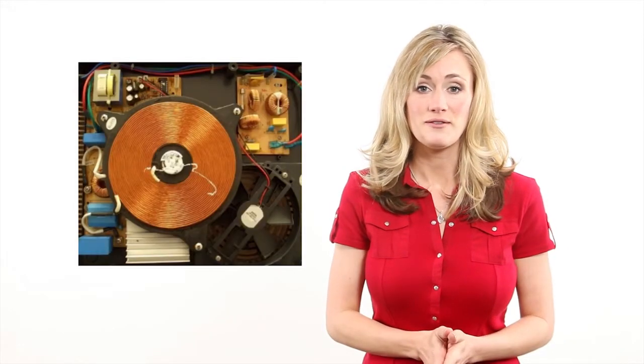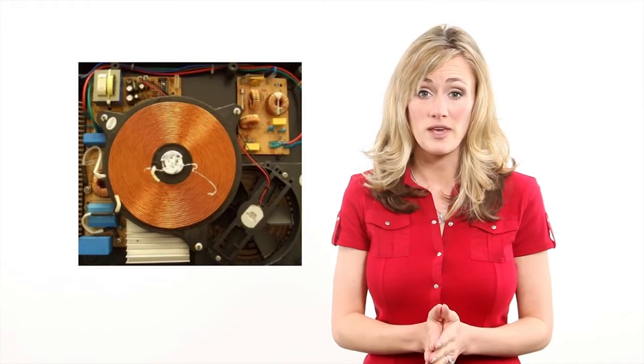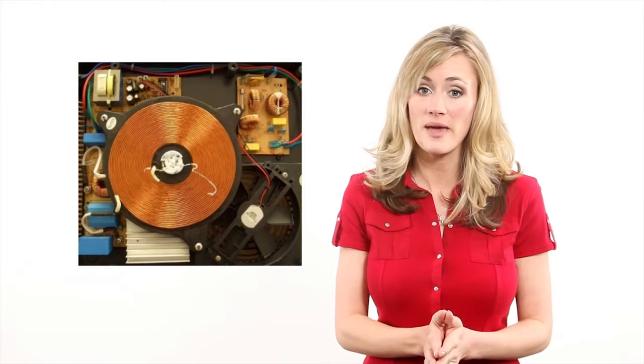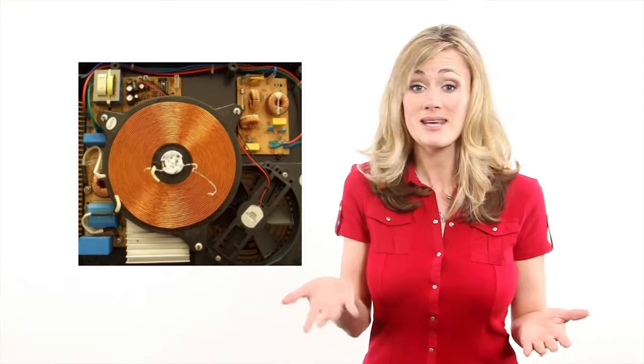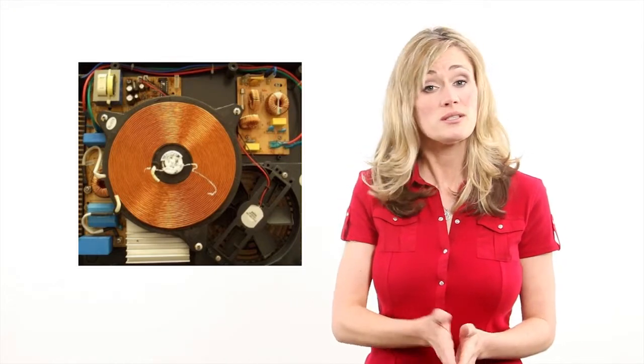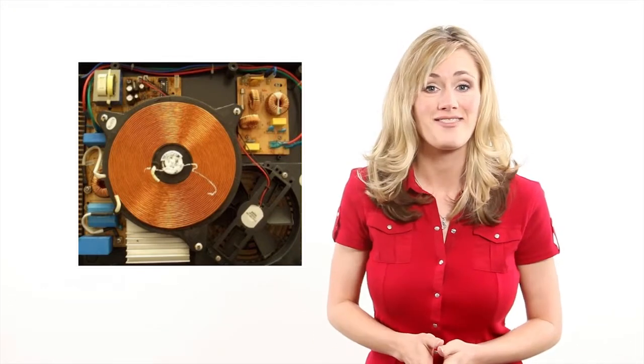A coil inside the stovetop emits an electromagnetic field, which gives the magnetic pots and pans an electric current. This current essentially allows the pans to heat themselves, reducing energy consumption as well as the risk of burns for the chef.